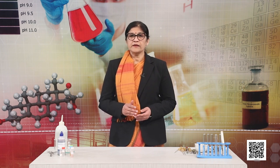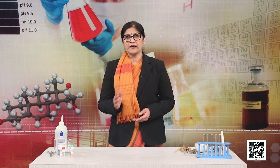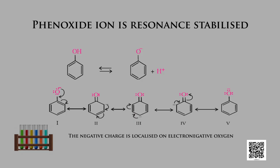The ionization of an alcohol and a phenol are compared on the slide. Due to the higher electronegativity of the sp2 hybridized carbon in phenol, electron density decreases on oxygen, increasing the polarity of the O-H bond and resulting in greater ionization. In alkoxide ions, the negative charge is localized on oxygen, while in phenoxide ions the charge is delocalized, giving five resonance structures that make the phenoxide ion more stable and favor ionization.